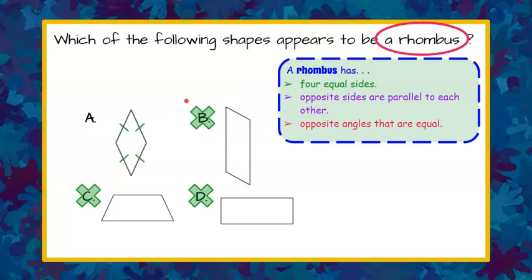But let's review the rest of our properties. A rhombus also has opposite sides that are parallel to each other. So we can see here that this side is parallel to this side. And we use arrows. When you see a diagram, that would be what would denote that they were parallel to each other.